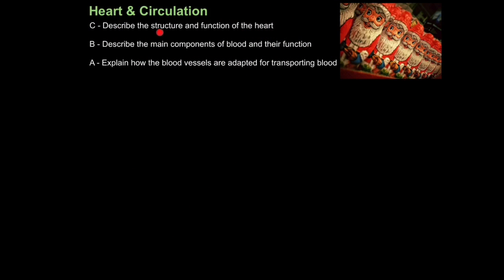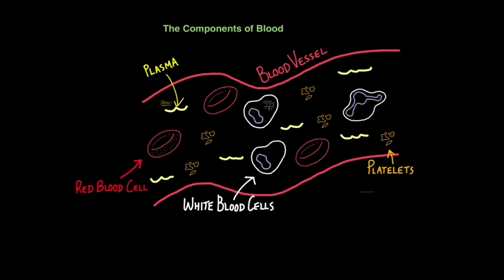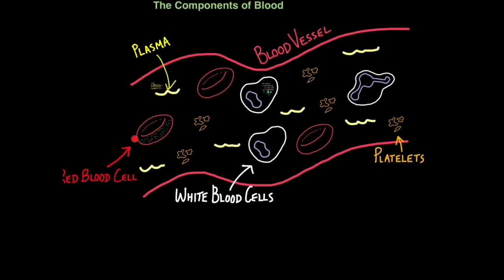So that is how you describe the structure and function of the heart. So now let's explain the function of the different components of blood. Blood is an organ made of different tissues. These tissues work together to form a similar function. That function being transporting valuable materials around the body. There are four components of blood you need to be able to explain. Red blood cells, white blood cells, platelets and plasma.